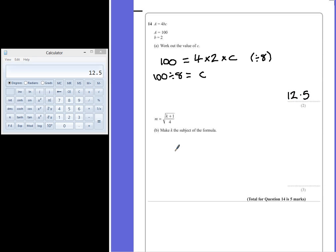Part B: we're given the formula M equals the square root of K plus 1 over 4. Make K the subject of the formula.